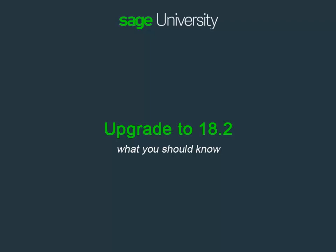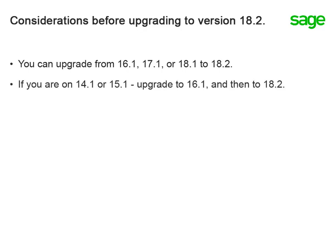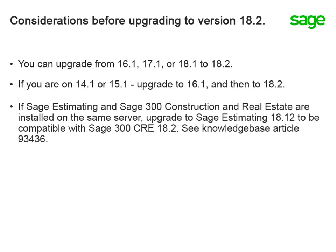Before you upgrade, here are the things you should know about. If you're on version 16.1, 17.1, or 18.1, you can upgrade directly to 18.2. If you're on 14.1 or 15.1, we recommend that you upgrade your software and data to 16.1 first and then upgrade to 18.2. If you use Sage Estimating with Sage 300 Construction in Real Estate and both products are installed on the same machine, note that only Sage Estimating version 18.12 is compatible with Sage 300 CRE 18.2. This means if you upgrade one, you must upgrade the other.